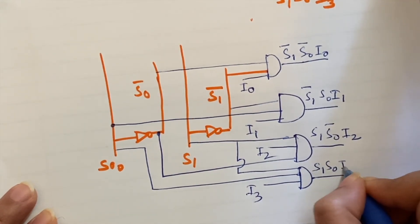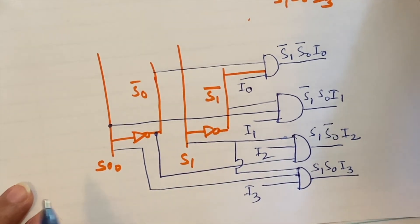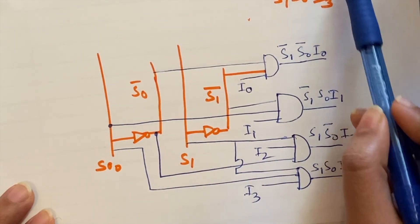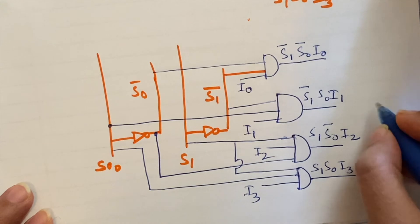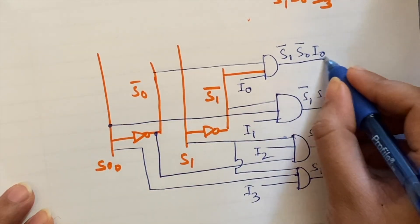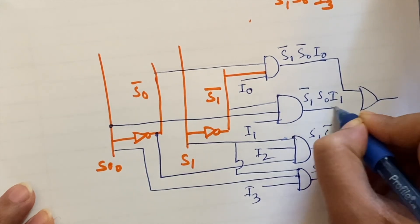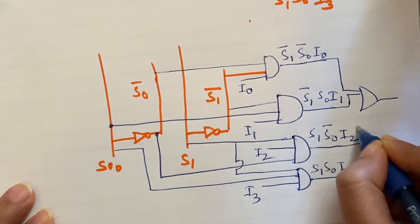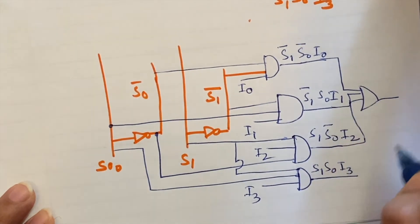s1, s0 and i3. And then there is the OR operation between all these terms, so here we will put an OR and connect all these to OR gate.